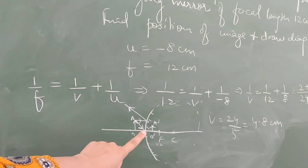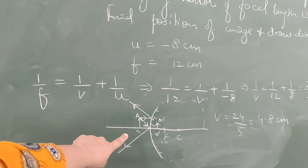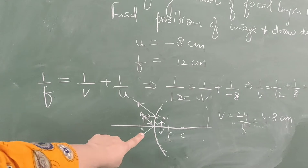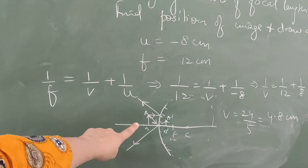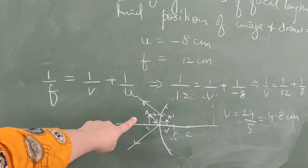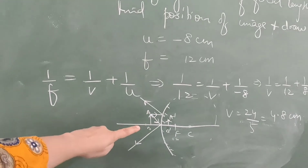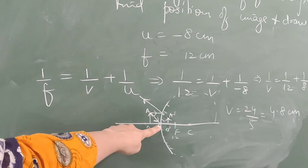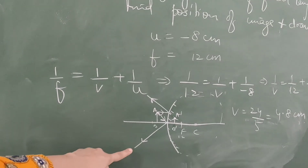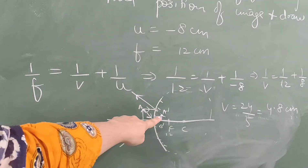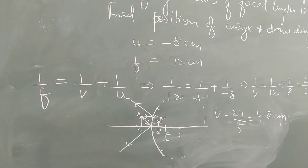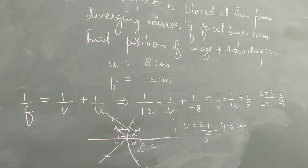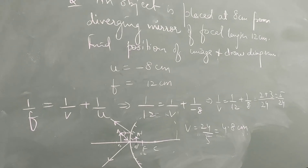The ray diagram shows the object kept 8 cm from the mirror with focus and center of curvature marked. Two rays are drawn: one parallel to principal axis and one directed toward the focus. The reflected rays are extended as dotted lines behind the mirror, and where they intersect gives the virtual image formed between P and F.